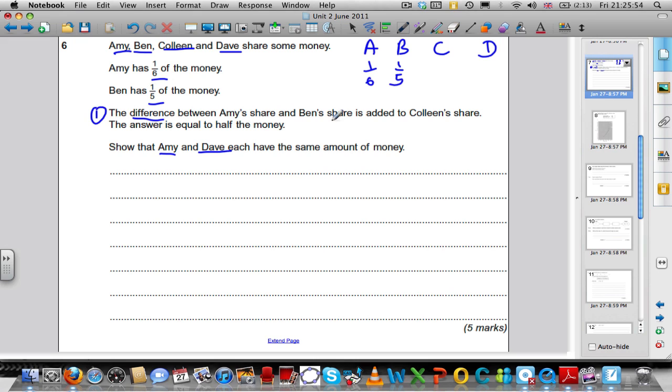The difference between Amy and Ben's share is added to Colleen's share. The difference in maths means take away. A 5th, take away a 6th. If adding or subtracting fractions is your aim, make the bottom numbers the same. 5 and 6 go into 30. And we've got a subtraction. This number here must be 6. This number here must be 5. You subtract them and you get 1 over 30.